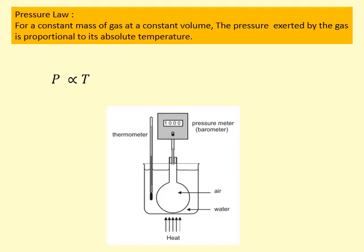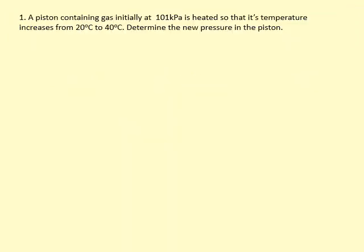So this can be written in multiple ways. I'm going to use this in this question here. A piston containing gas, initially at 101 kilopascals, is heated so its temperature increases from 20 degrees to 40 degrees. Determine the new pressure in the piston.